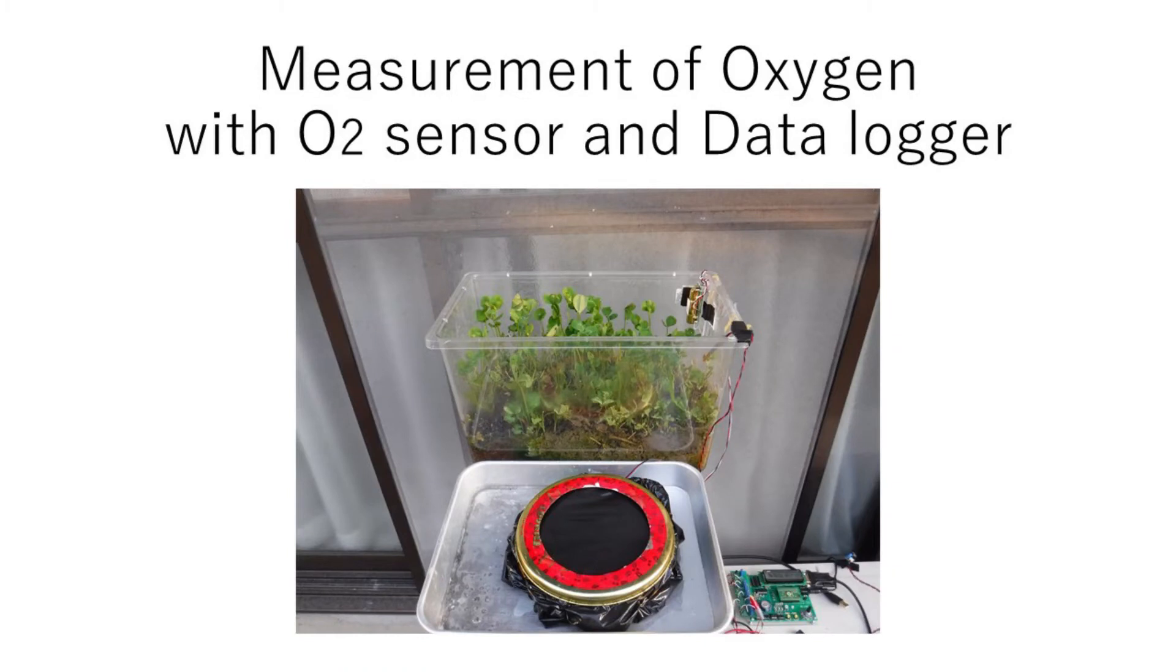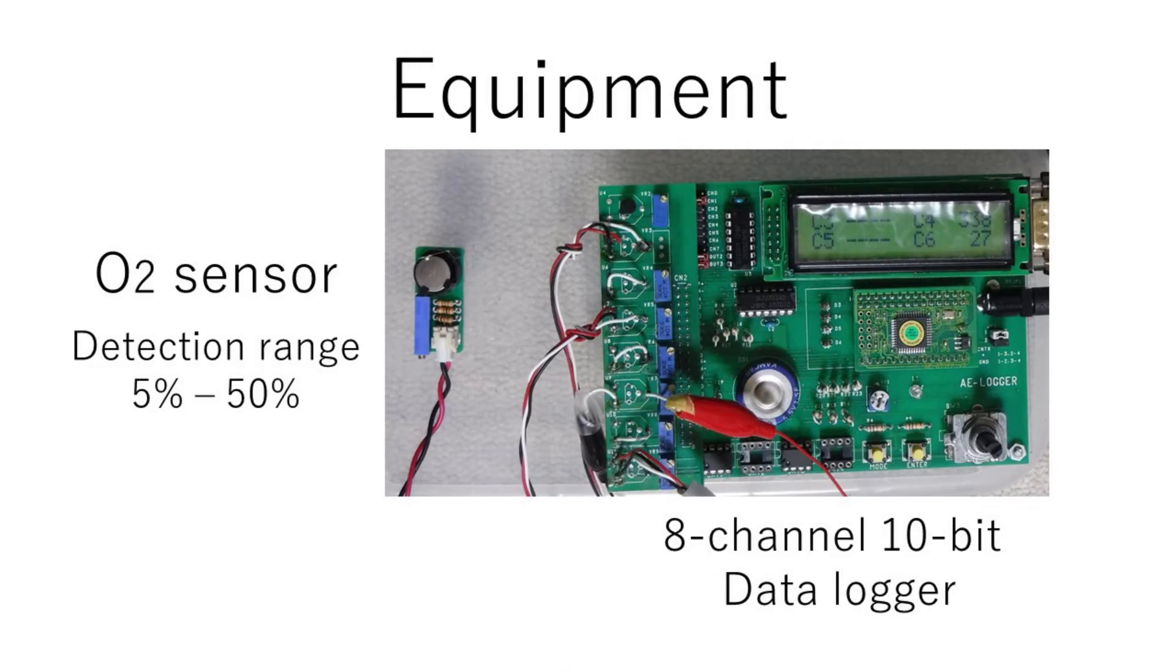Let's do the measurement of oxygen with O2 sensor and the data logger. This O2 sensor has the detection range from 5% to 50%.